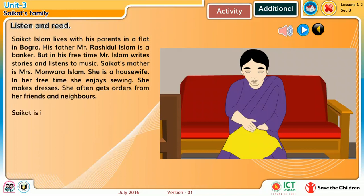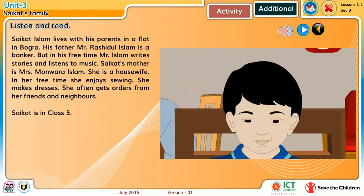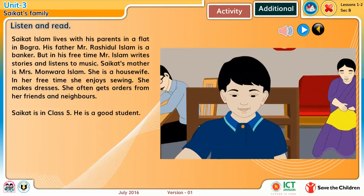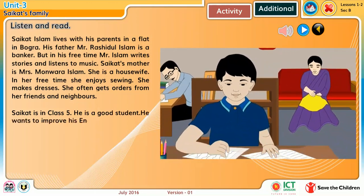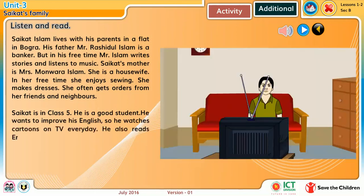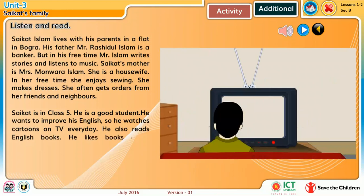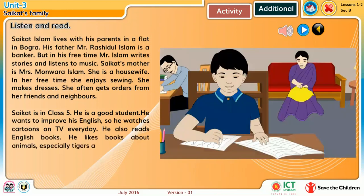Shoikot is in class 5. He is a good student. He wants to improve his English, so he watches cartoons on TV every day. He also reads English books. He likes books about animals, especially tigers and lions.